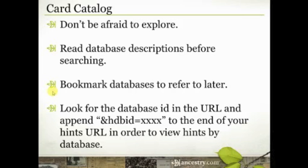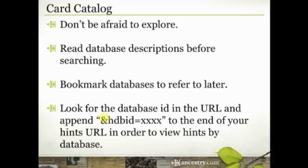For example, I use the Social Security death index a lot — I just want to view hints from that index to see if anyone in my tree has passed away that I haven't collected death information for yet. When the 1940 census came out, I viewed just hints from that census. Any time I add a new family, I might view just hints from the 1920 or 1930 census. So: when viewing hints, click on record hints, add &HDBID= and the four-digit database ID to the end of the URL, hit enter, and you'll see hints for only that specific database.